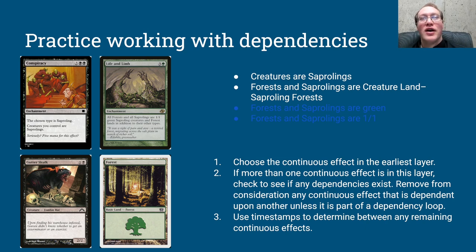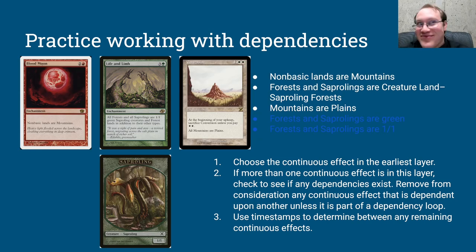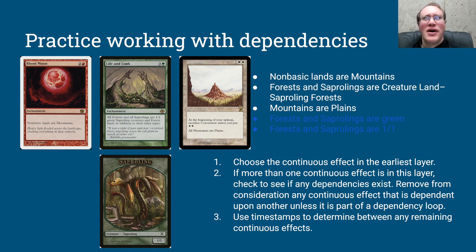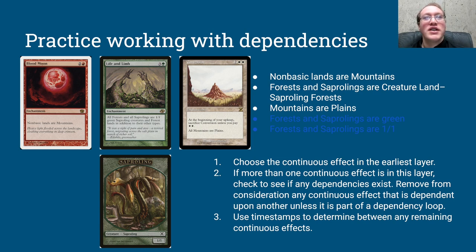So now we're ready for — oh boy, this is exciting — this is already one of my favorite questions I ever wrote: Blood Moon plus Conversion. There's another video where I talk about that, but here we're throwing in Life and Limb. Having a rules question with all three of these together probably well exceeds the complexity of something that could ever come up unless you had an entire pod of EDH players cooperating to make the most confusing, complicated judge test scenario possible. But if you and your friends have a Blood Moon, Life and Limb, Conversion deck, here's how that would work.